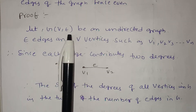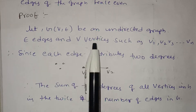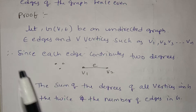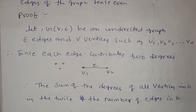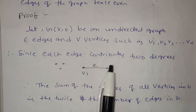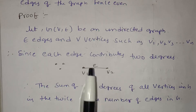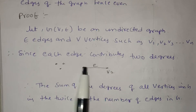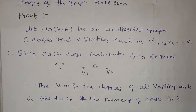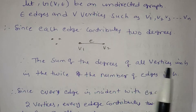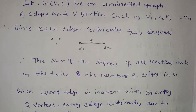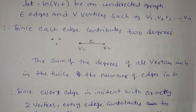Consider a graph with vertices v1, v2, v3 up to vn. Since each edge contributes two degrees — one degree to v1 and one degree to v2 — the sum of degrees of all vertices in G is twice the number of edges in G.